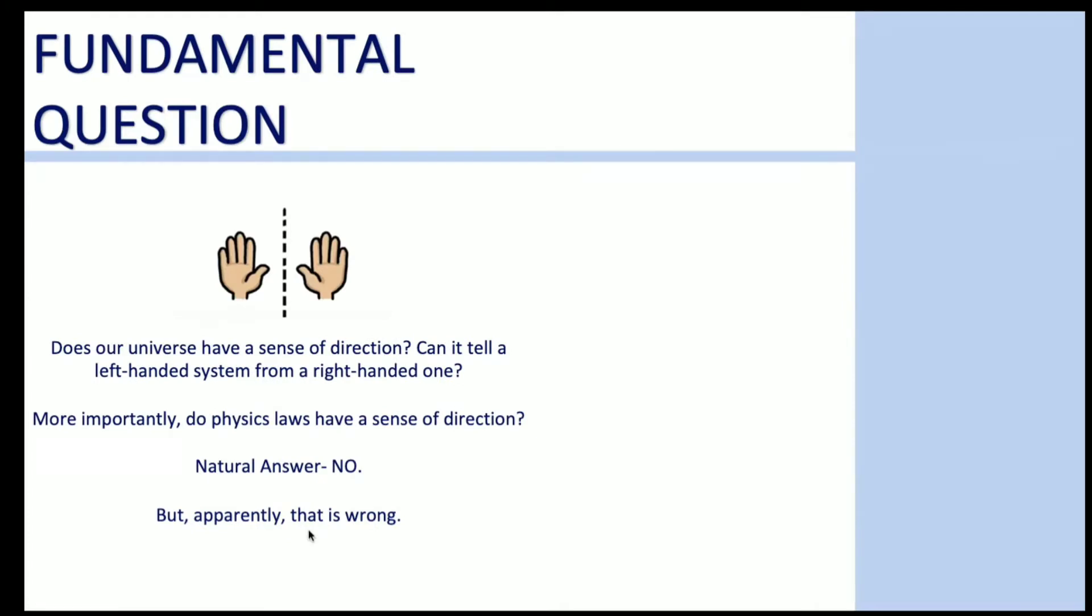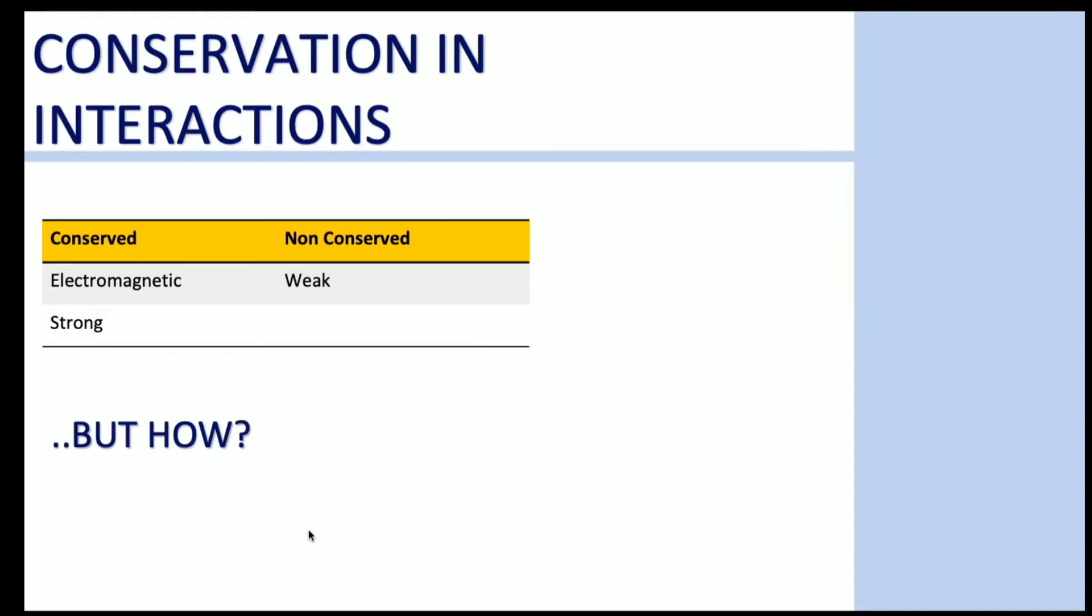The fundamental question we are concerned with is: does our universe have a sense of direction and can it tell a left-handed system from a right-handed one? More importantly, do physics laws have a sense of direction? Can physics laws distinguish between a left-handed system or a right-handed one? Up until the 1950s, everybody assumed the natural answer would be that laws do not matter about this. The interactions that do conserve parity are electromagnetic and strong. The interaction which does not conserve this operation is weak.